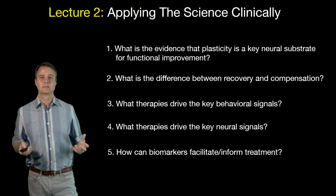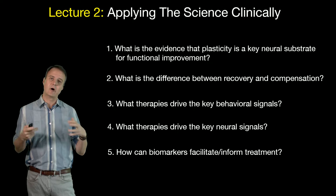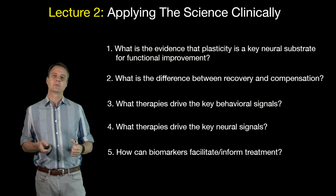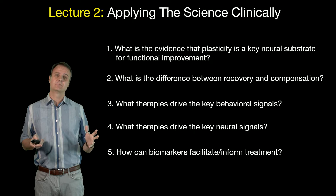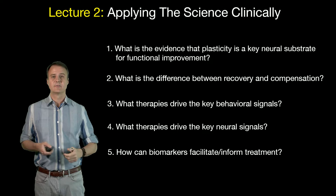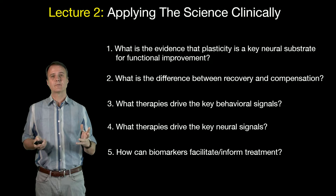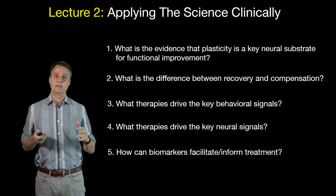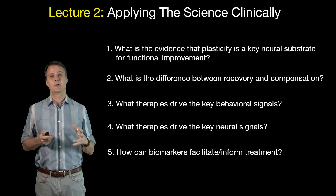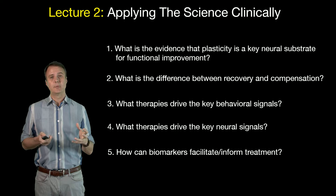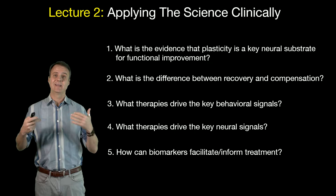First, we'll look at the actual evidence that neuroplasticity is the neurobiological substrate for recovery or enhancement of function after injury or brain disease. We'll then discuss the difference between recovery and compensation at both neural and behavioral levels — something really important for occupational and physical therapists alike. We'll also talk about behavioral therapies that drive the behavioral signals important for driving plasticity, and adjuvant therapies that take advantage of what we know about the biology of the brain to enhance the impact a therapist has on a patient.